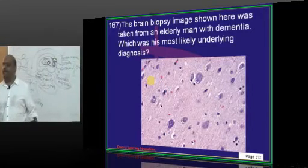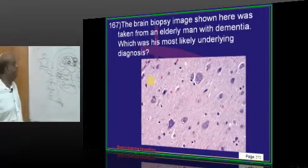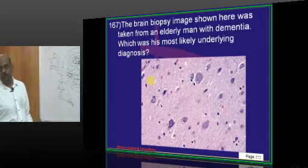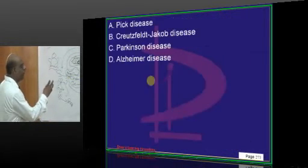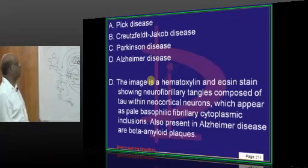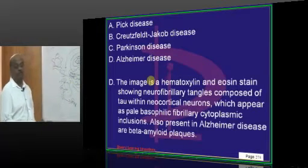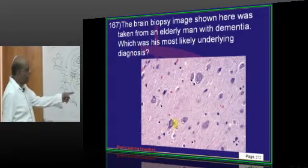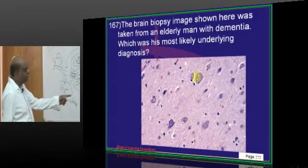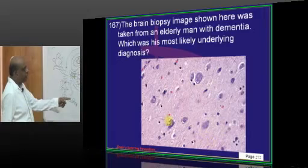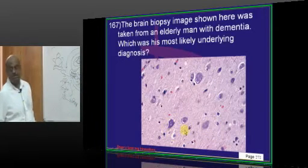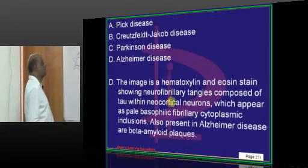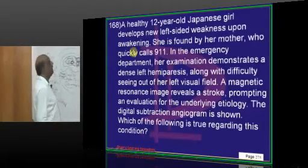A brain biopsy has been shown for an elderly man with dementia. On hematoxylin and eosin stain, you can find neurofibrillary tangles. The neurofibrillary tangles are an indication of Alzheimer's disease — this is what you need to understand.